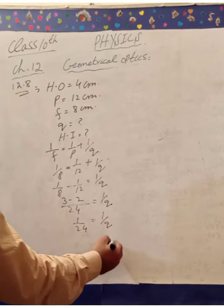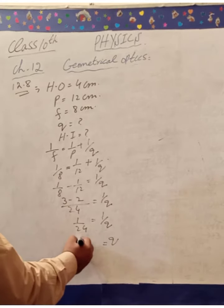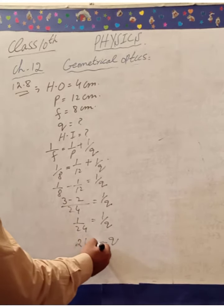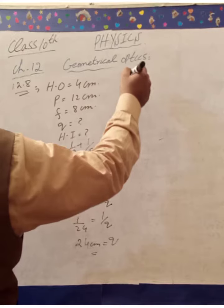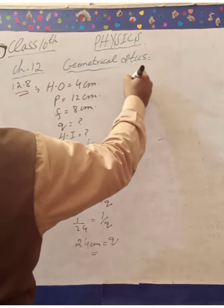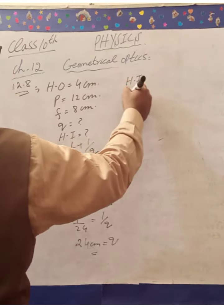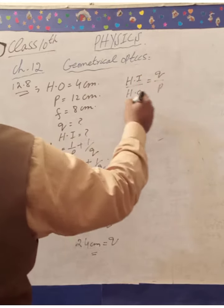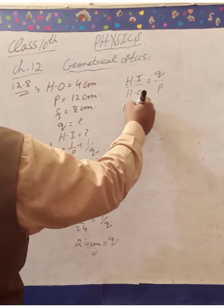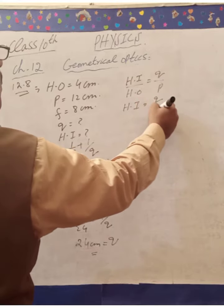The height of the image is given by the magnification formula: H_I/H_O = Q/P.